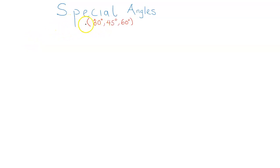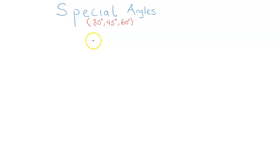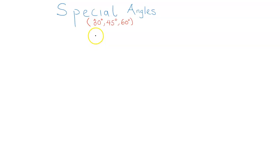Hello everyone. In this video we are going to be considering special angles. There are five of them: 0 degrees, 30 degrees, 45 degrees, 60 degrees, and 90 degrees. But in this video we will be focusing on three — 30 degrees, 45 degrees, and 60 degrees. They are called special angles because we can obtain their values without using a calculator.